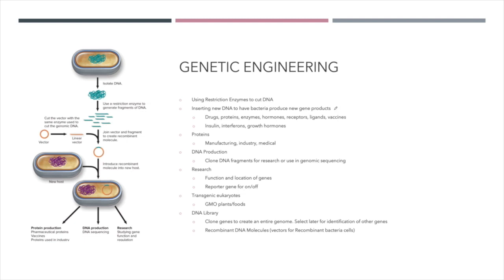This type of genetic engineering has been around for about 50 years. We can use it to create different drugs used in hospitals and human-specific proteins like insulin, which is now human-specific so the body doesn't reject it. We can also produce classes of proteins called enzymes, hormone replacement therapy, and different types of growth hormones using bacteria and genetic engineering.